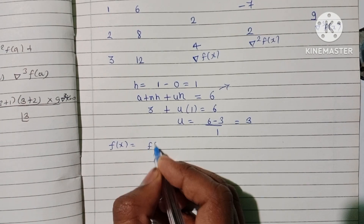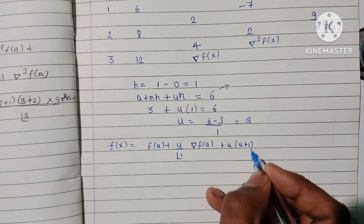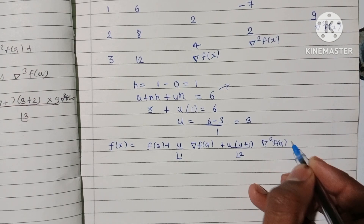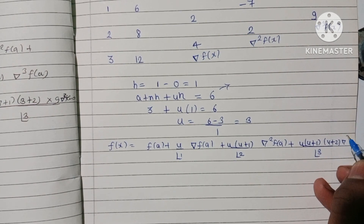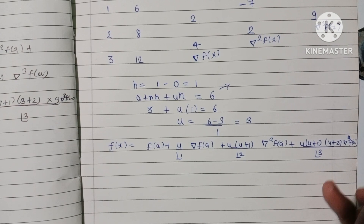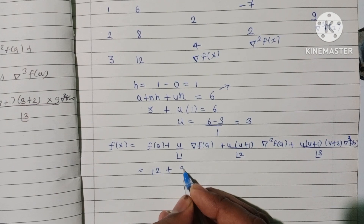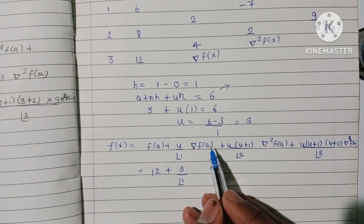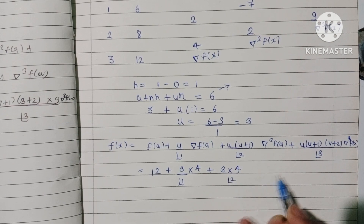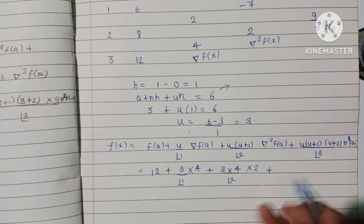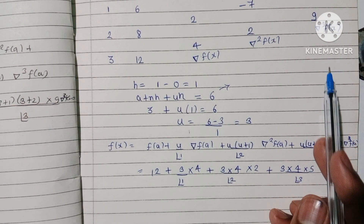Newton's backward interpolation formula is: f(x) = f(a) + (u/1!)·∇f(a) + (u(u+1)/2!)·∇²f(a) + (u(u+1)(u+2)/3!)·∇³f(a). Substituting: f(a) = 12, ∇f(a) = 4, ∇²f(a) = 2, ∇³f(a) = 9, u = 3, u+1 = 4, u+2 = 5.